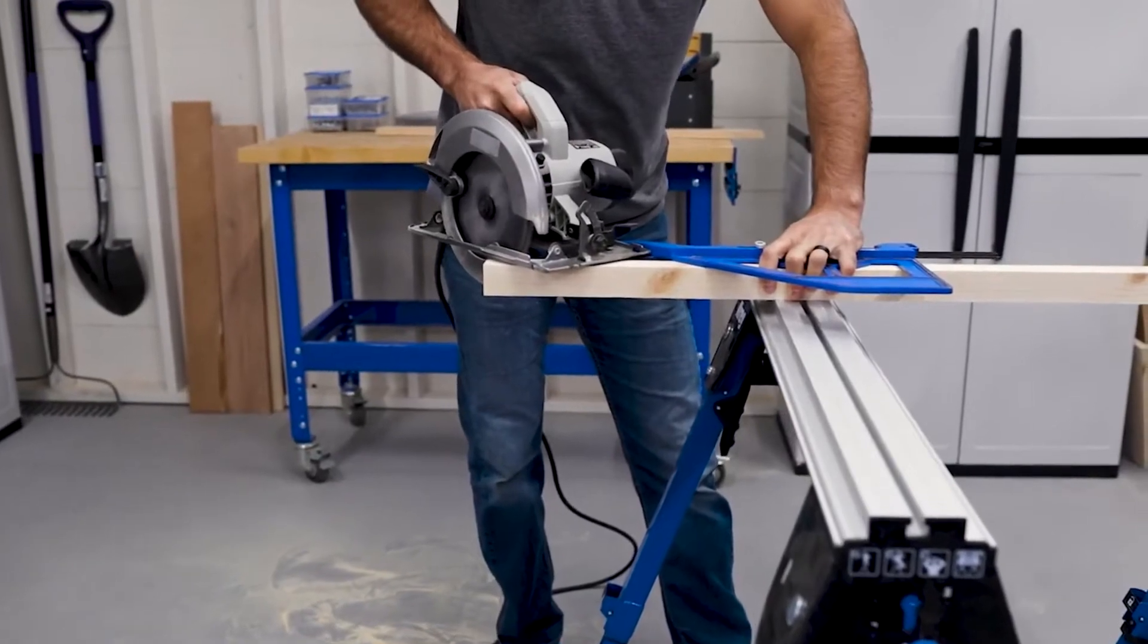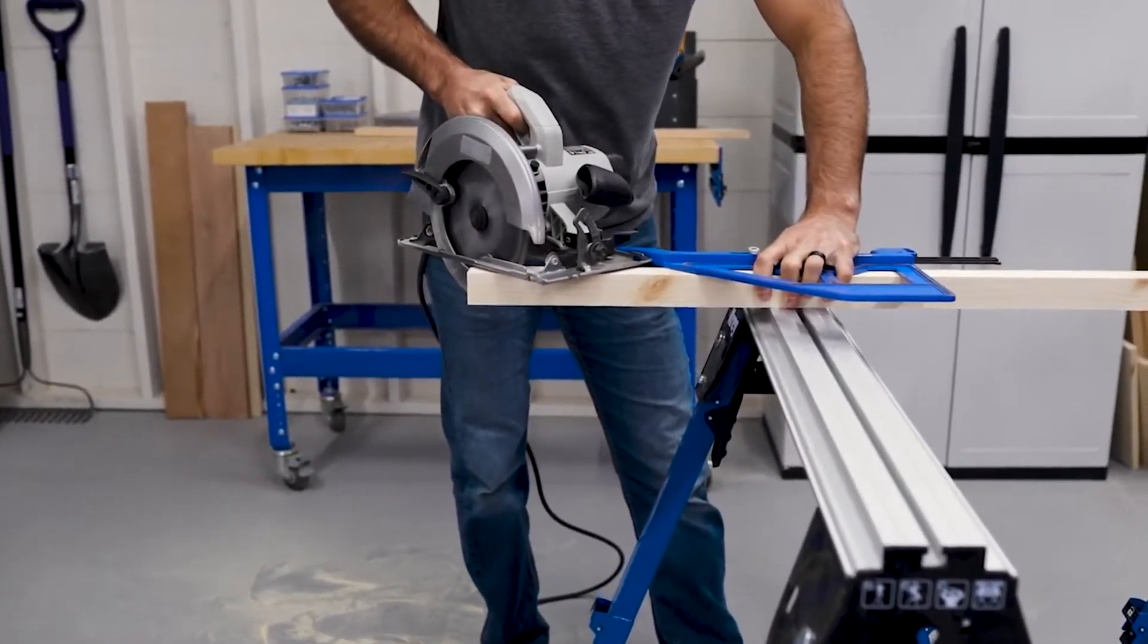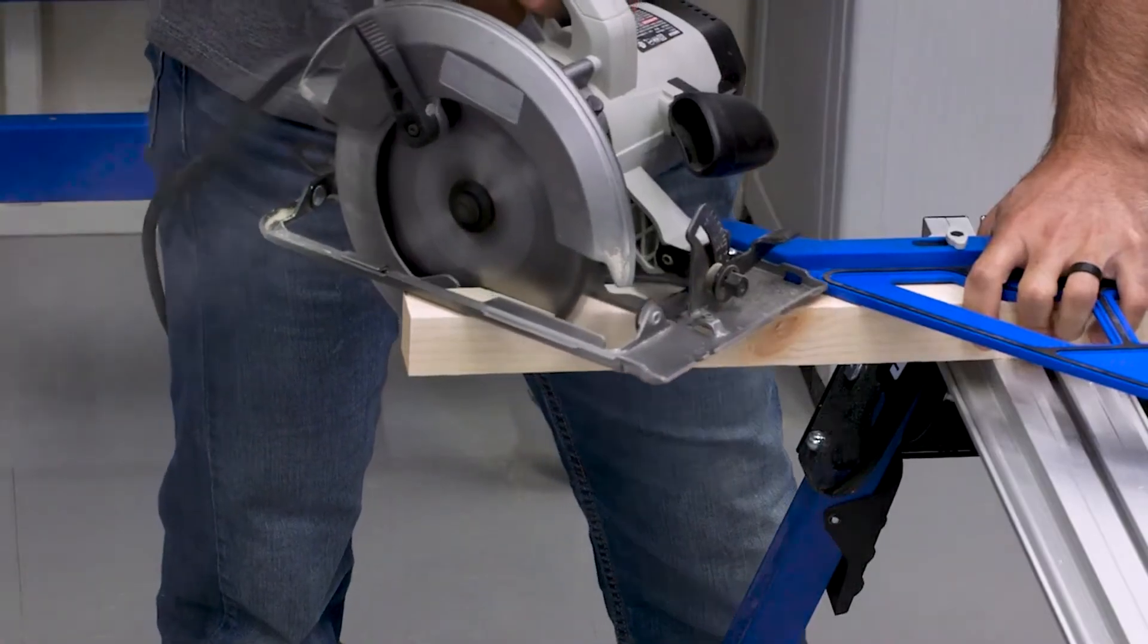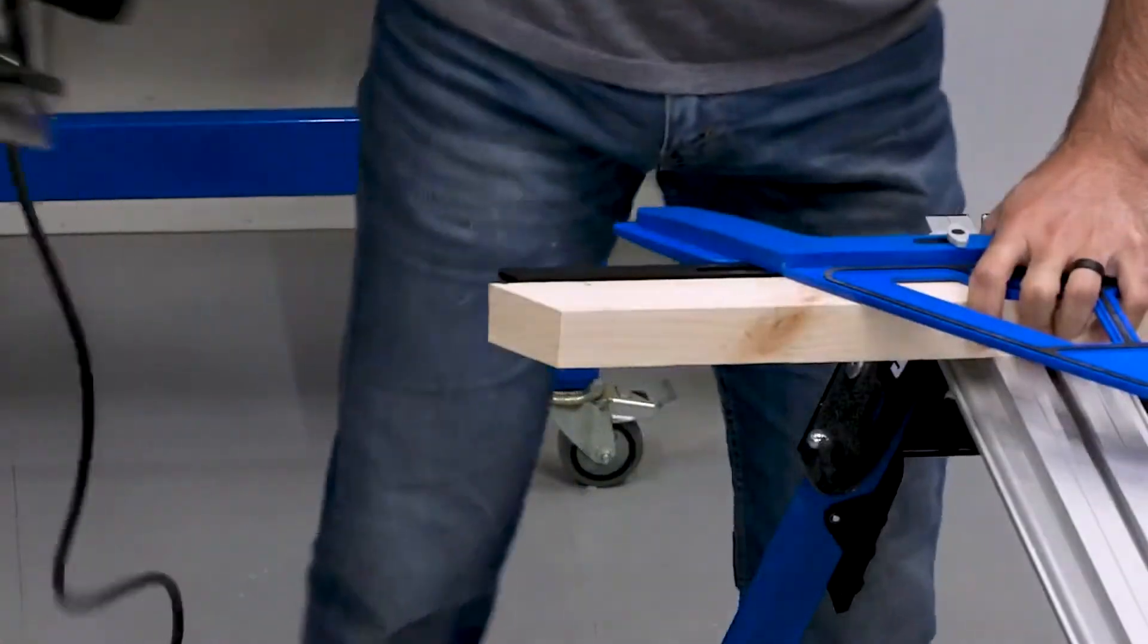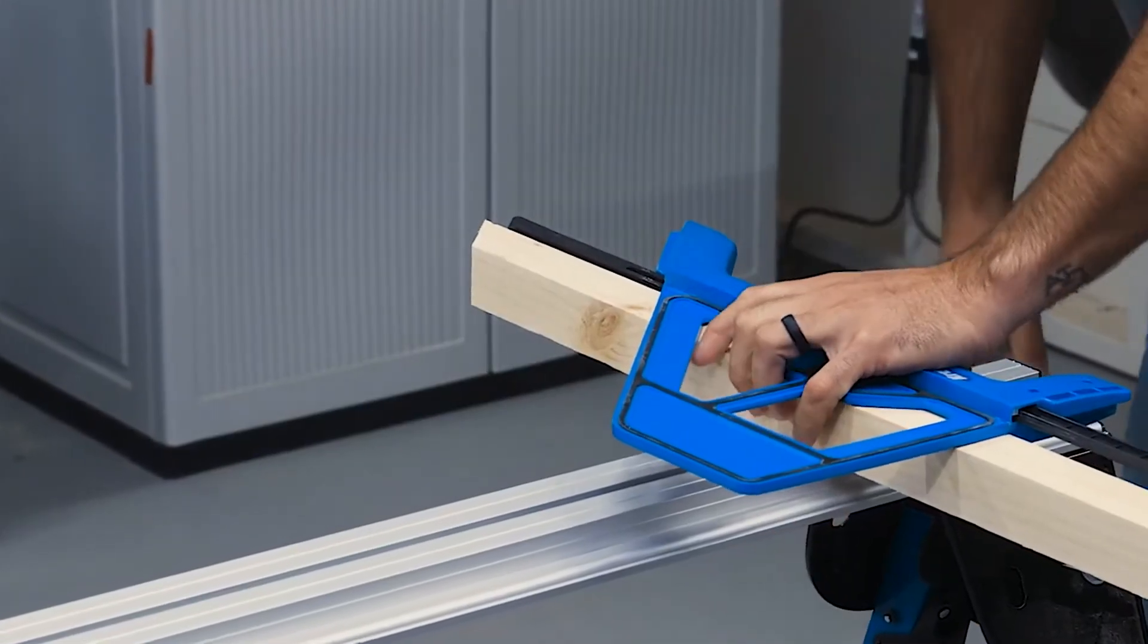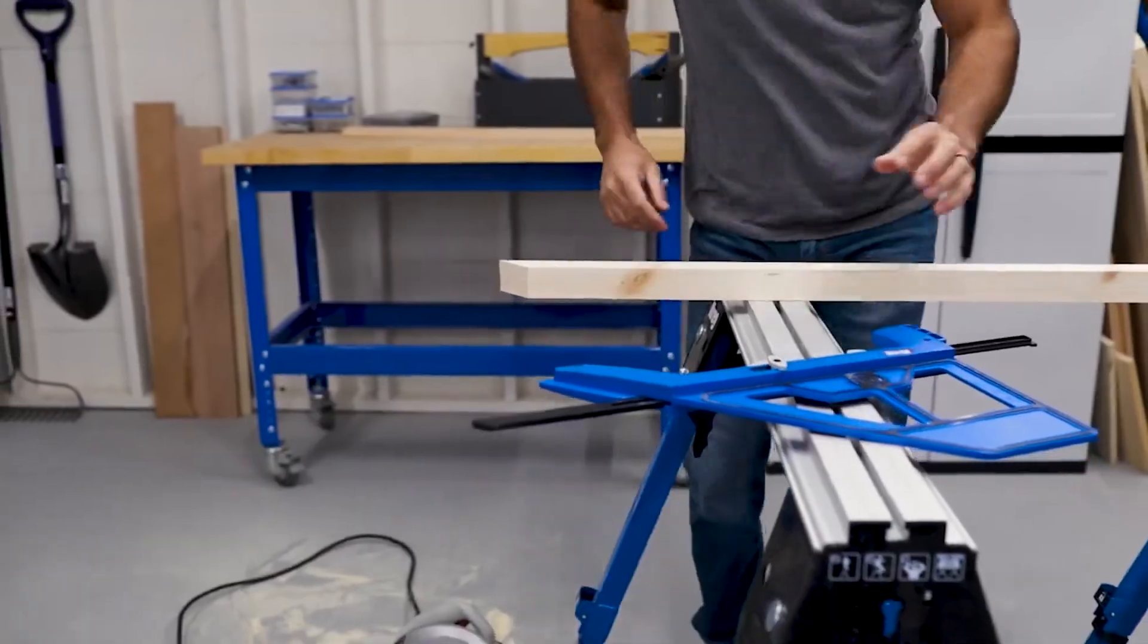Because keeping the blade aligned as you start the cut can be challenging, especially when cutting at 45 degrees, the portable crosscut also features a saw support ledge that keeps your saw base stable at the beginning of the cut.